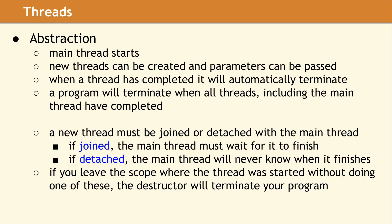Here is the abstraction the C++ threading library provides. When your program starts, a main thread is set up. New threads can be created, and parameters can be passed to them. When a thread has completed, it will automatically terminate. Your program will terminate when all of the threads, including the main thread, have completed. After you start a new thread, you must join or detach the new thread from the main thread. If you fail to do this and leave the scope where the thread was instantiated, the destructor for the new thread will be called and your program will simply terminate.